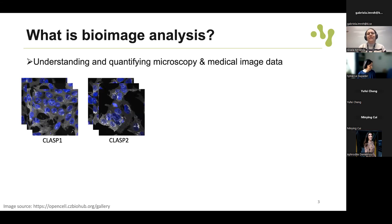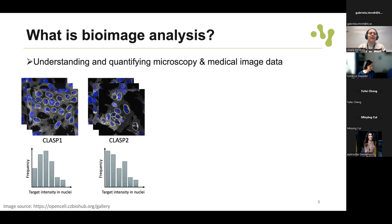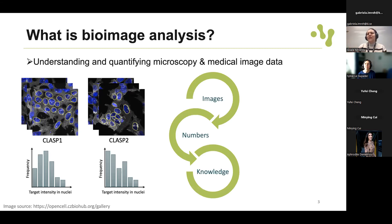What is bioimage analysis? When we talk about bioimages we want to understand and quantify microscopy and medical image data - we want to extract information from images. For instance, we want to quantify fluorescence intensity in the nuclei so we can analyze profiles across experimental groups. We are going from images to numbers, and numbers to knowledge, and this process is quantitative - we obtain quantitative measurements. It's also objective: we define the goal, whether to analyze intensity or shape of objects.